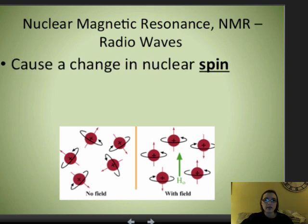Well, NMR actually causes a change in nuclear spin. So the radio waves that are being used to shoot at the atoms or the molecules cause a change in nuclear spin.